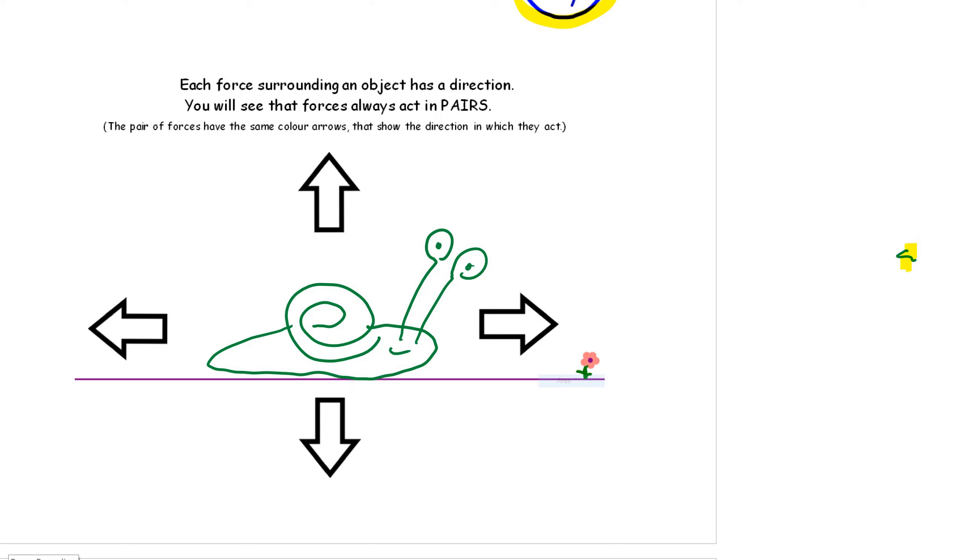There are four forces that surround a snail. These two act as a pair. And these two also act as a pair of forces. The first two I've written in. We've got weight force downwards. And we've got an equal normally but opposite lifting force or a reaction force. Can you write those two in?